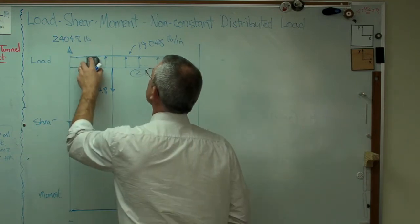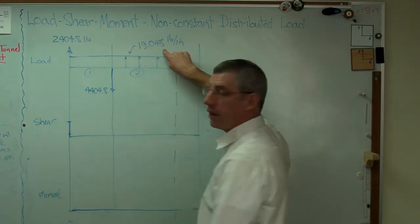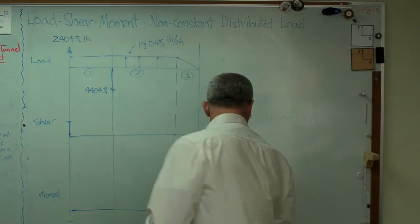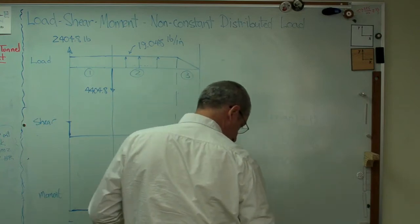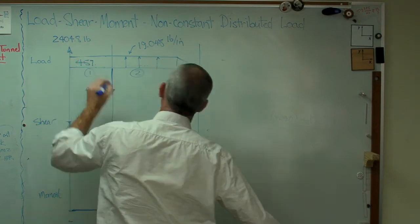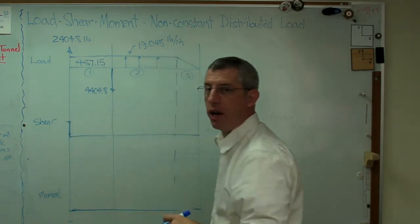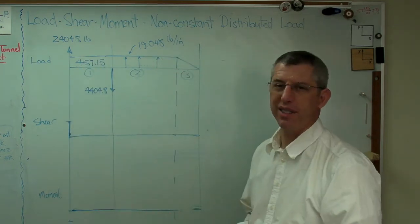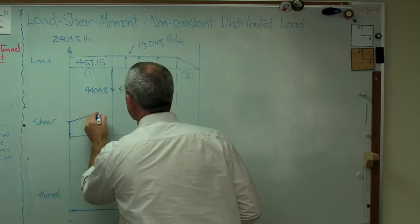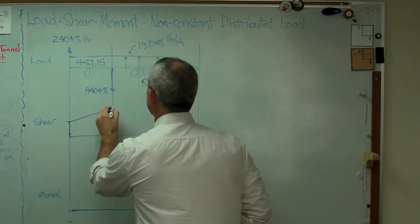And the load I accumulate as I go across is just the area of that rectangle right there. I know the height of the rectangle is 19.048. And I know the base is 24 inches. So you multiply those two numbers together. Base times height equals area of a rectangle. You get 457.15. I've got my notes down here. So sorry, I have to keep looking at those. I can't remember all these numbers off the top of my head. And that's going to come up here and look like that. I'm going to accumulate that much and get to here.